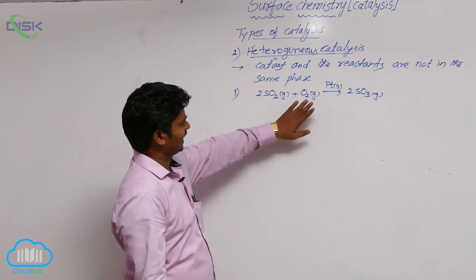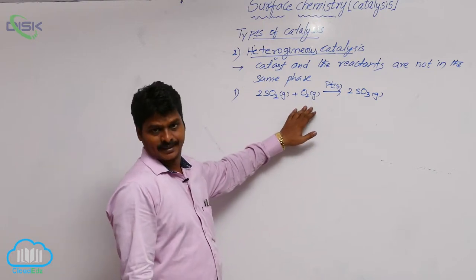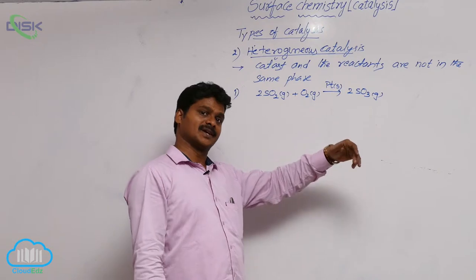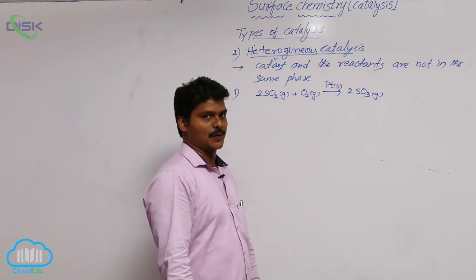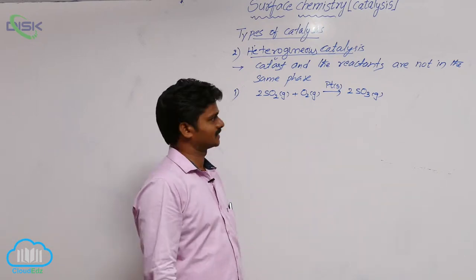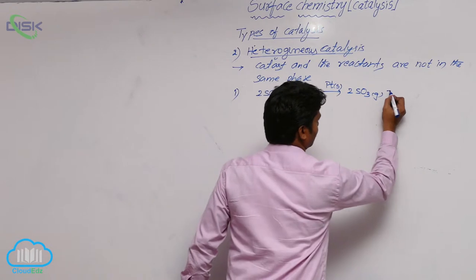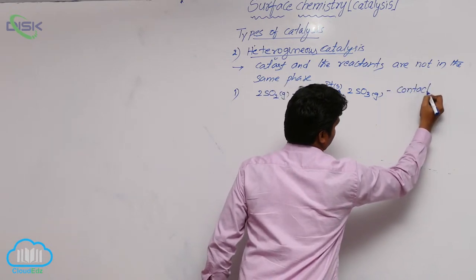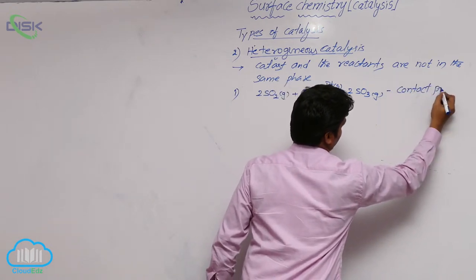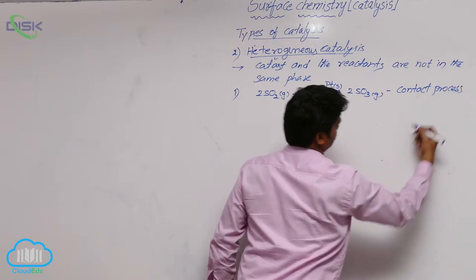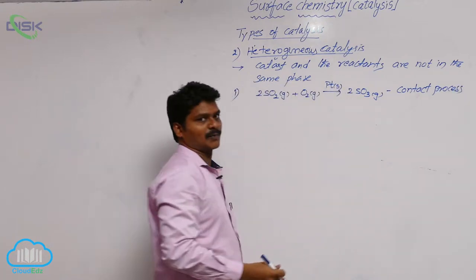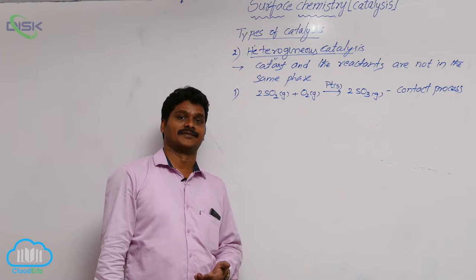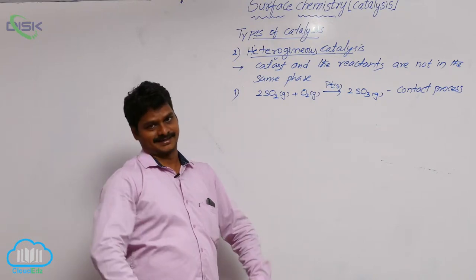This heterogeneous catalysis reaction — the preparation of SO3 and from that sulfuric acid — is called the contact process. The contact process is the industrial method for the preparation of sulfuric acid.